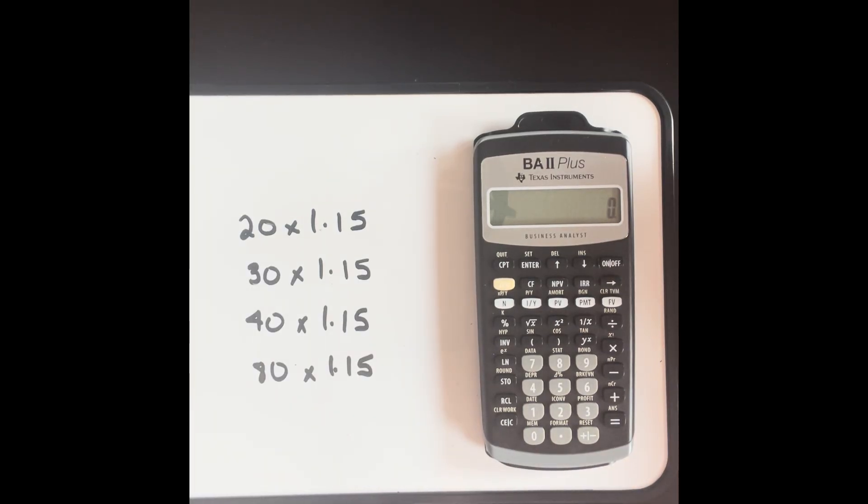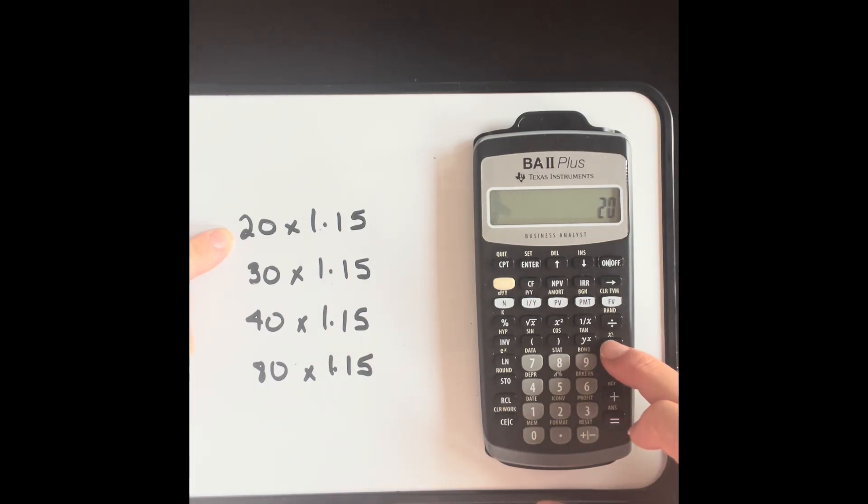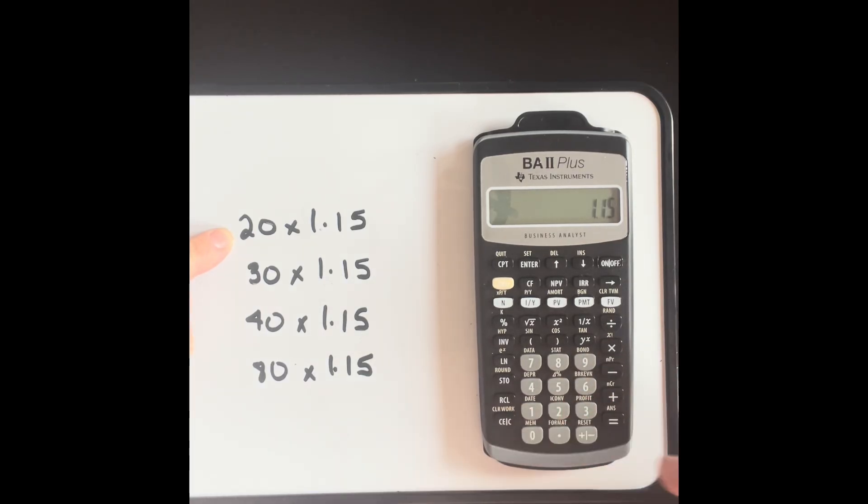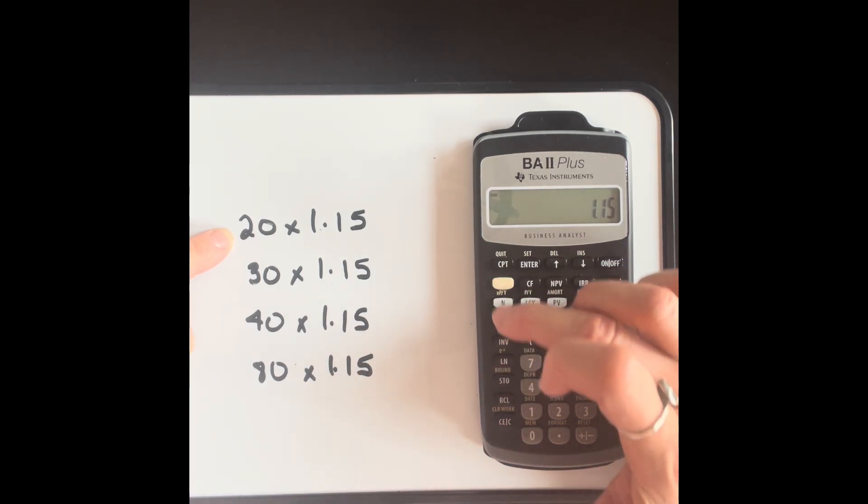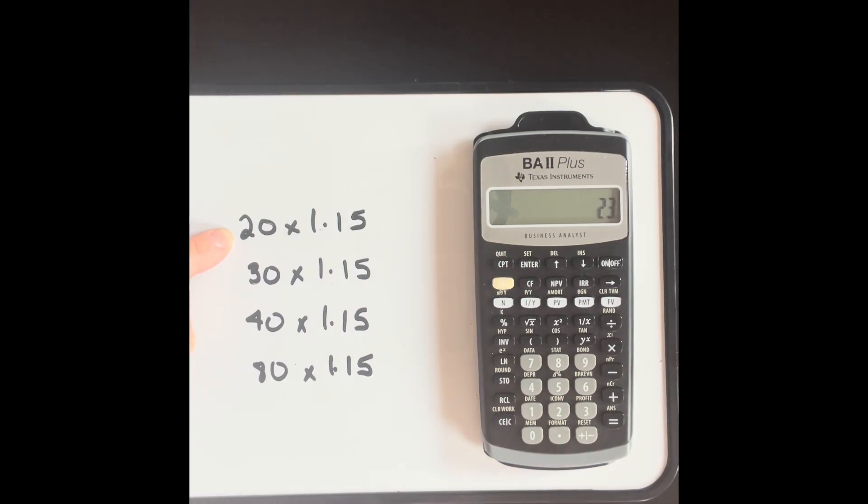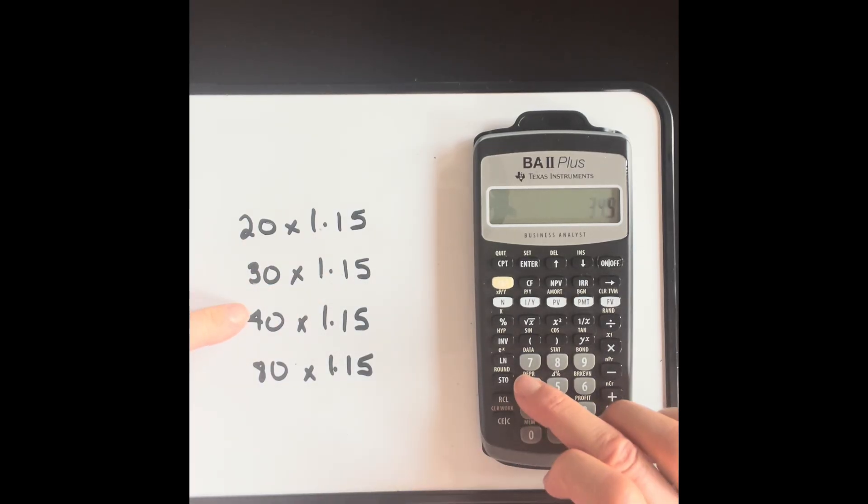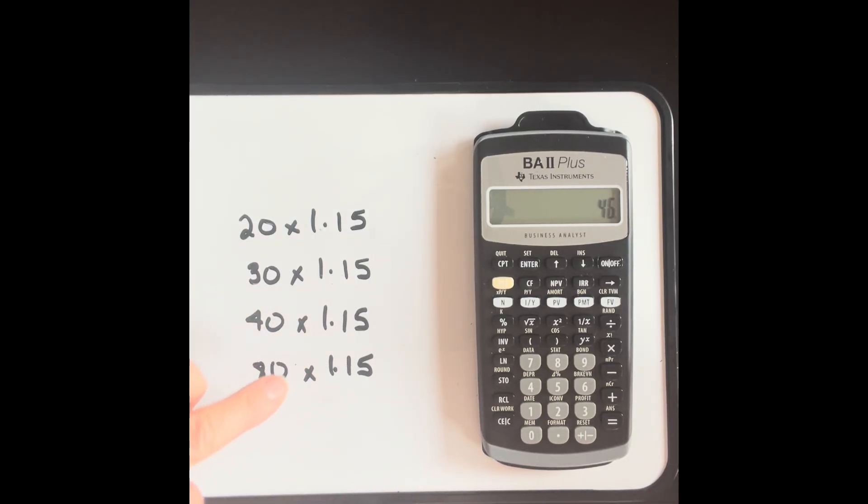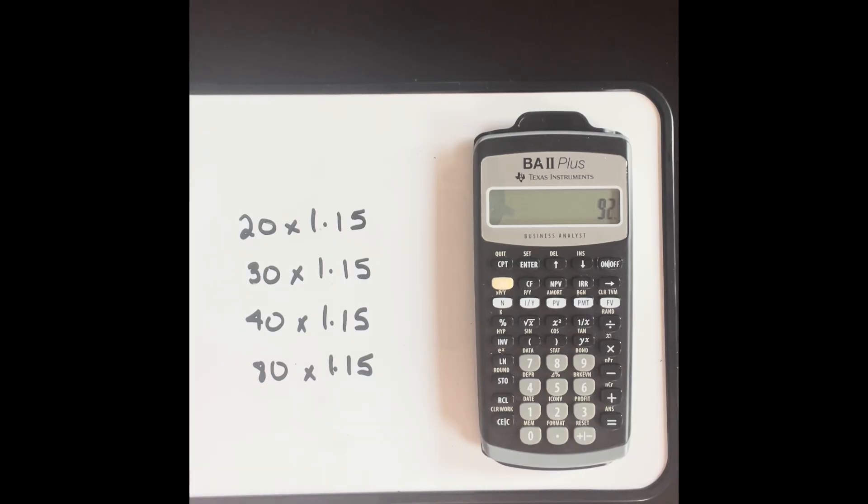Another very useful function on this calculator is the constant function. So let's say you had a series of numbers, and you wanted to do the same operation to all of those numbers. Instead of typing each of them in separately, what we can do is start with the first one. So we're going to go 20 times, and then we enter the number that we're going to be repeating, the constant. And let's make it a constant by going second k. And then we'll press equals. So that tells us what 20 times 1.15 is. Now don't clear your calculator because you want to do that same operation with the same number for the rest of these. So what we're going to do now is just go 30 equals. So it did that same calculation. 40 equals. There's our answer for that. 80 equals. And so on. So that can save you a lot of time if you're doing the same calculation on a series of numbers.